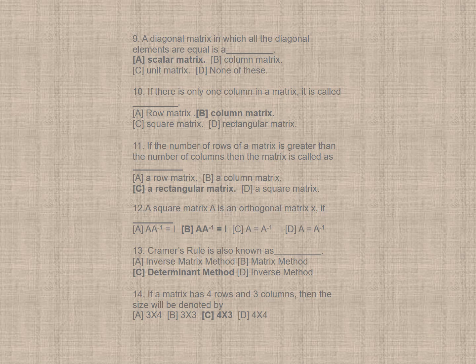Question 11. If the number of rows of a matrix is greater than the number of columns, then the matrix is called, the correct option is C, a rectangular matrix. Question 12. A square matrix A is an orthogonal matrix X, if the correct option is B, A into A to the power minus 1 is equal to 1. Question 13. Kramer's rule is also known as C, determinant method.